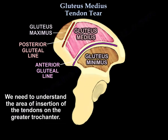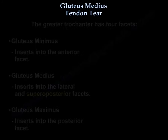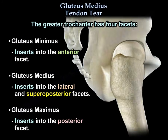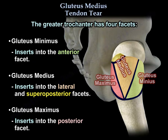For treatment of gluteus medius and minimus tears, we need to understand the area of insertion of the tendons on the greater trochanter. The greater trochanter has four facets. The gluteus minimus inserts into the anterior facet. There are lateral and superoposterior facets where the gluteus medius inserts, and then there is a posterior facet for the gluteus maximus.